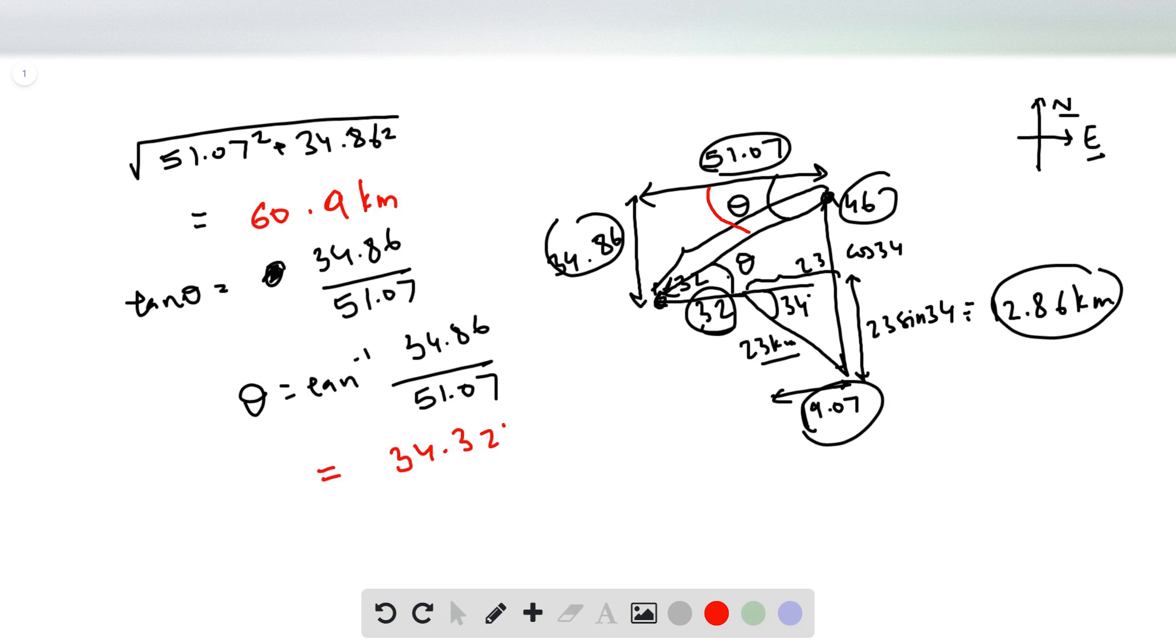Hence, we want to go a distance of 60.9 kilometers at an angle of 34.32 degrees. But this is west, and we turn downward which is south, and hence this angle would be south of west.